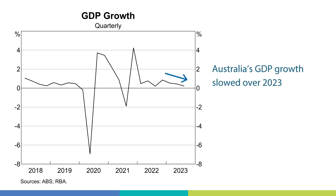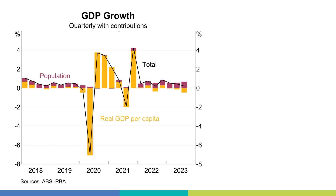If we focus on recent developments, it shows that Australia's economic growth slowed over 2023. It can be helpful to break down GDP into different parts to better understand what is driving this growth. We can break GDP down into contributions from per capita growth and population growth.